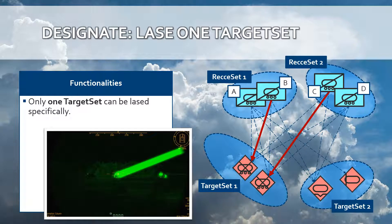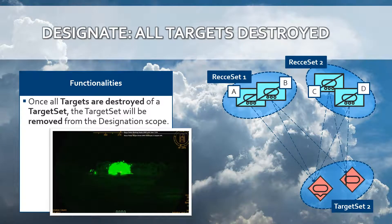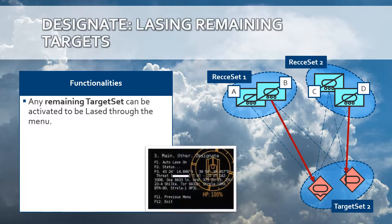Certain target sets can be lased specifically. In this example, I am only ordering target set 1 to be lased and keeping target set 2 idle. Those reconnaissance vehicles that can lase those targets will start doing so. Once all the targets have been destroyed of a target set, then that target set will be removed from the designation scope. Target set 2 can then be selected to lase the remaining targets. All of this can be done through the menu.